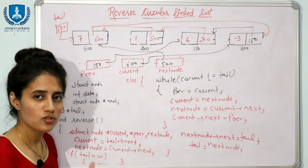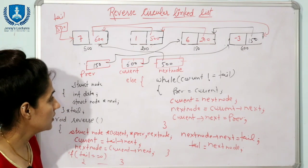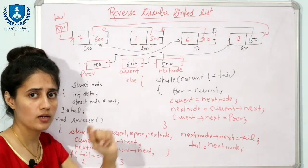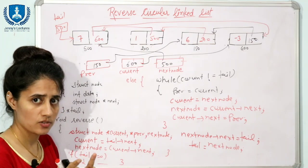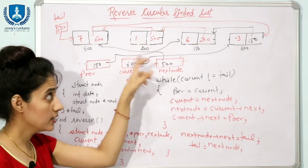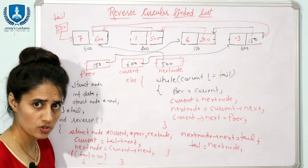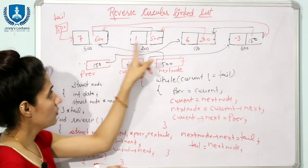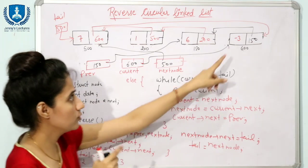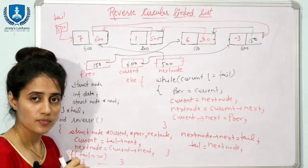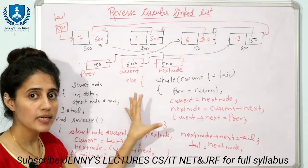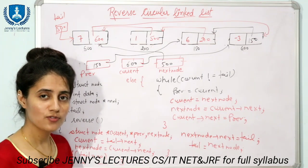Reversing a circular linked list is essentially the same as reversing a singly linked list. The only difference is that the last node contains the address of the first node, so we must take care of that link and update it at the end. In the main function, call create_cll, display (output: 7 1 6 3), then reverse, then display again (output: -3 6 1 7). In the next video, we will see the implementation of a doubly circular linked list.